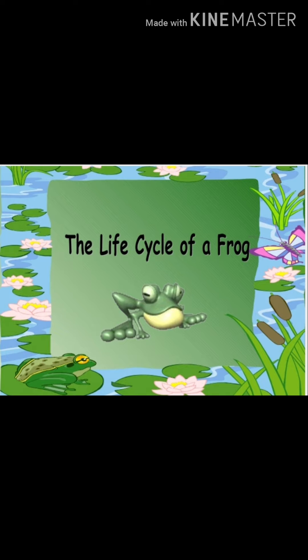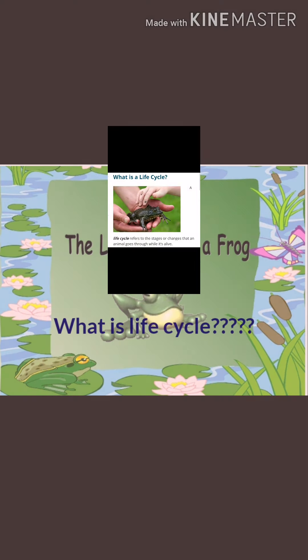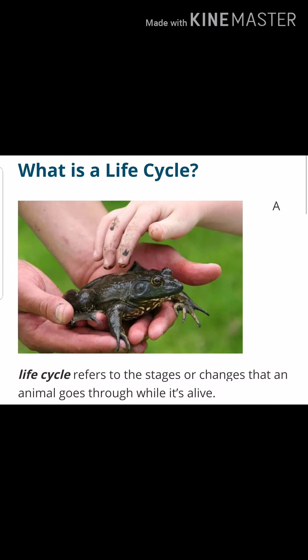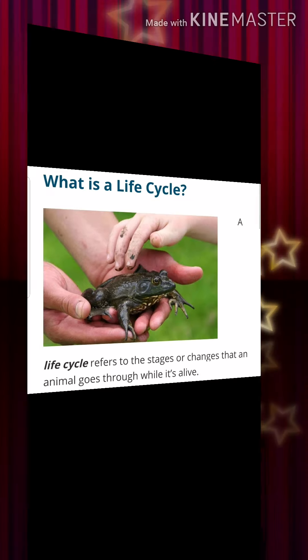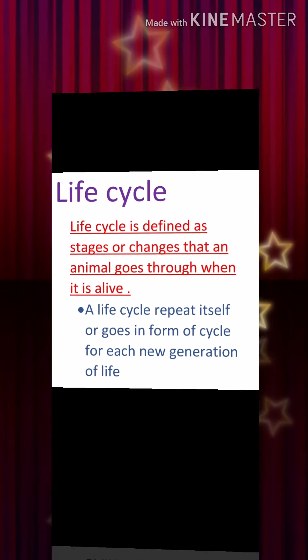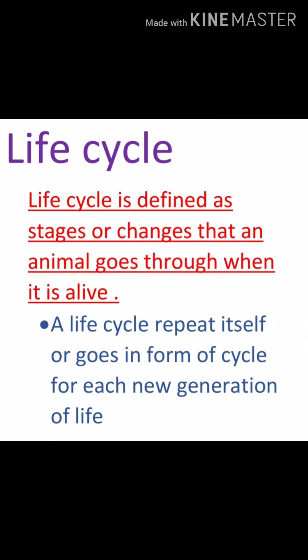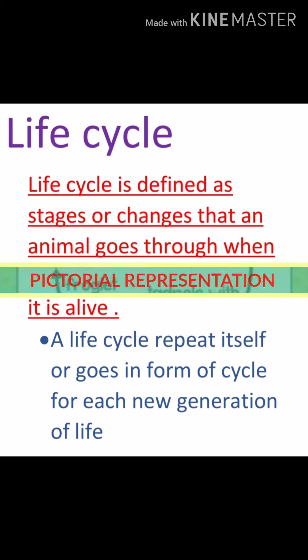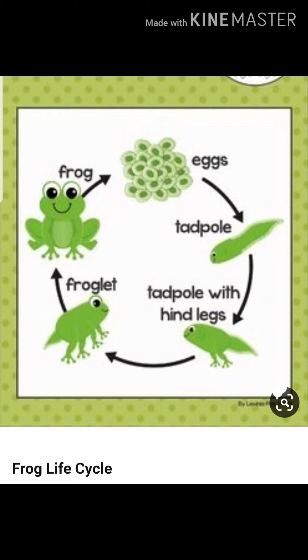Coming to our main topic, that is the life cycle of frog. First of all, let me clarify what a life cycle is. A life cycle is defined as the stages or changes that an animal goes through when it is alive. A life cycle repeats itself and goes in the form of a cycle for each new generation of life.